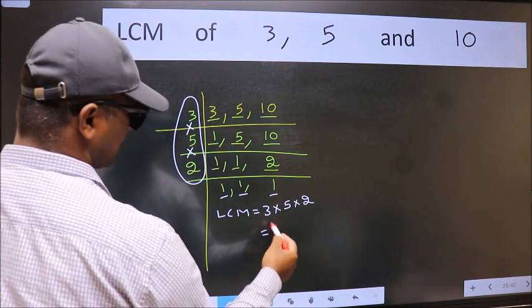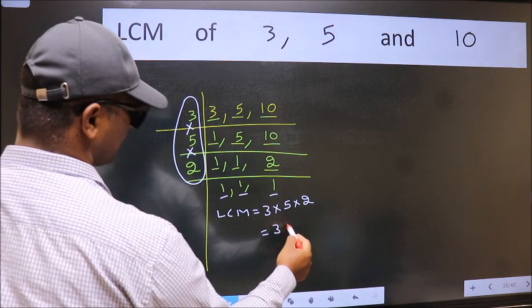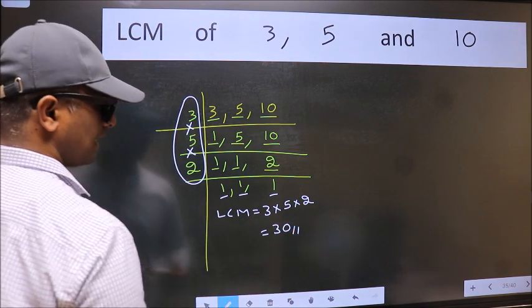When we multiply these numbers we get 30 as our LCM.